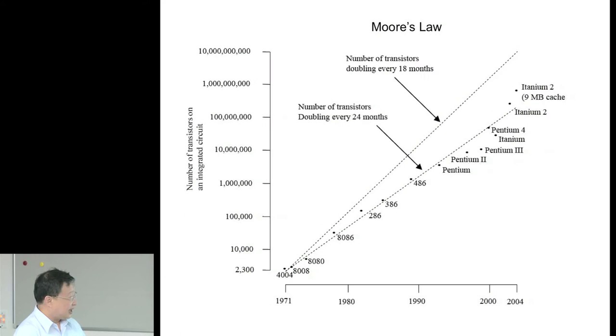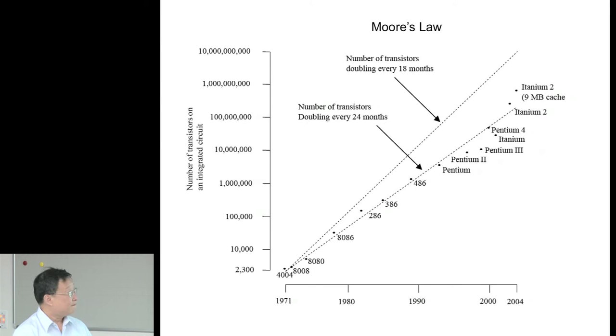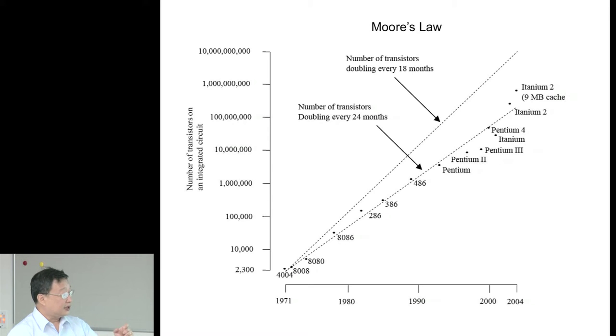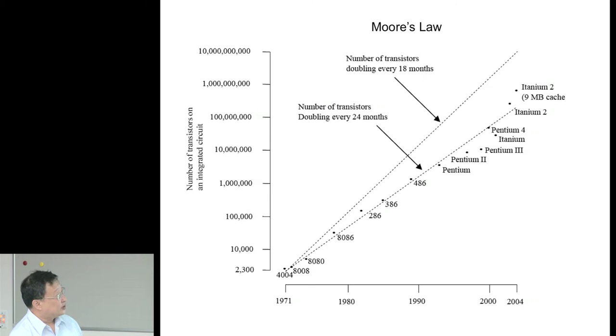I want to give you a brief introduction to quantum computation and quantum information. Silicon technology has been largely responsible for the exponential growth in information technology. Moore's Law tells you the number of transistors you can pack on a chip grows exponentially — doubling every 18 months. This trend continued up to at least 2004 and beyond.